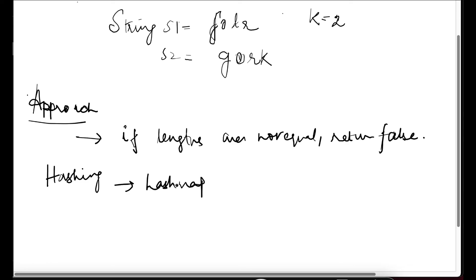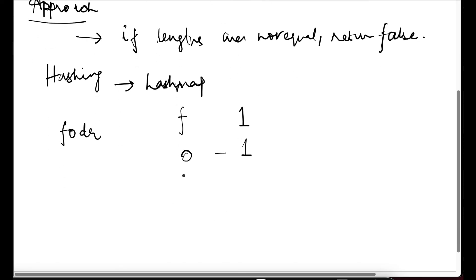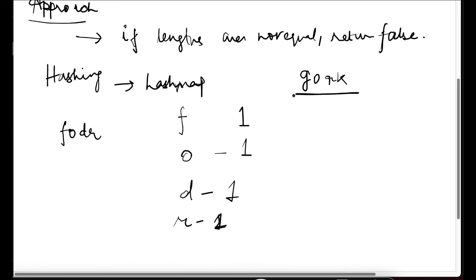In the hash map, for the first string 'fodr', we store each character as a key with its occurrence as the value: 'f' occurs once, 'o' occurs once, 'd' occurs once, and 'r' occurs once. Now for the second string 'gork', we check each character in the map. If the character is already contained — like 'o' — we decrement its frequency from 1 to 0. Similarly 'r' is found so we decrement it to 0.